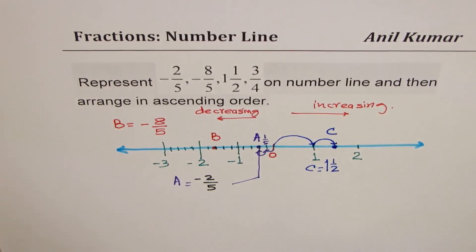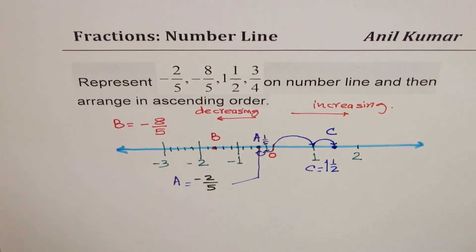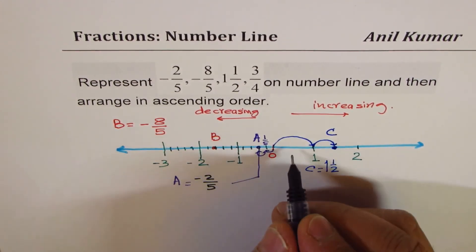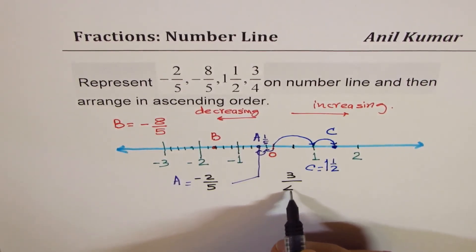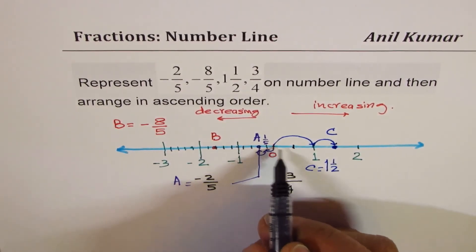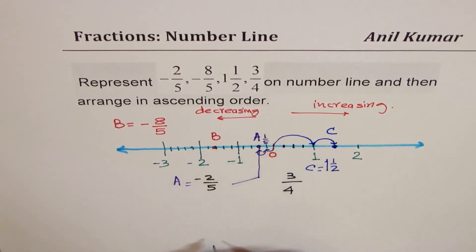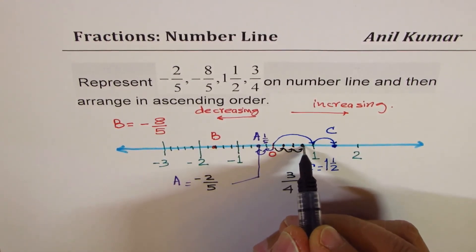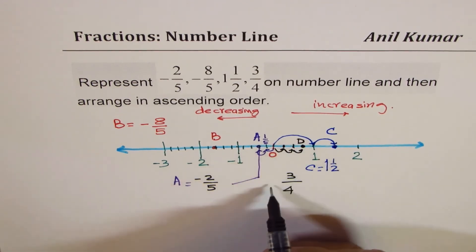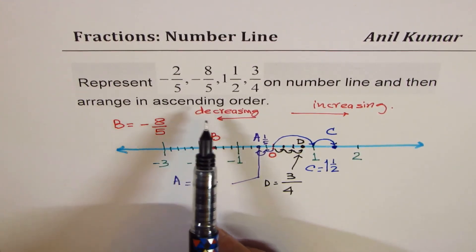How about 3/4? 3/4 is less than 1. To get 3/4 we divide one full unit into four equal parts. That is half, and half of half is one-fourth. So 3/4 means 1, 2, and 3 — this point is D, and D is 3/4. Now we arrange them in ascending order, which is increasing order.